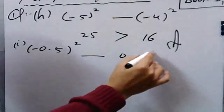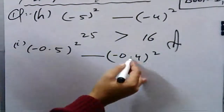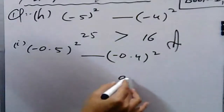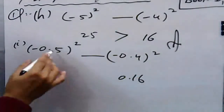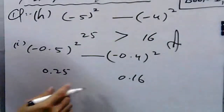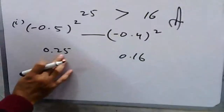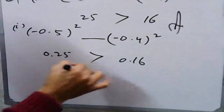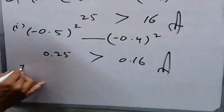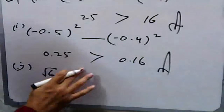In part i: (−0.5)² dash (−0.4)². Due to the even exponent, the negative sign is removed. You get 0.25 and 0.16 respectively. So 0.25 is greater than 0.16 — put the greater than sign.